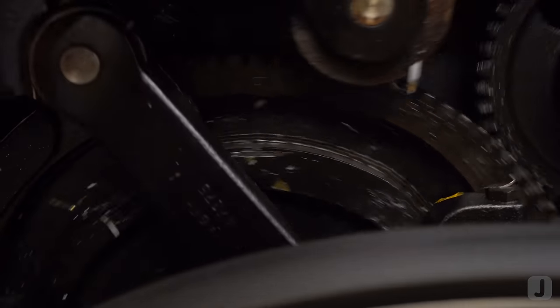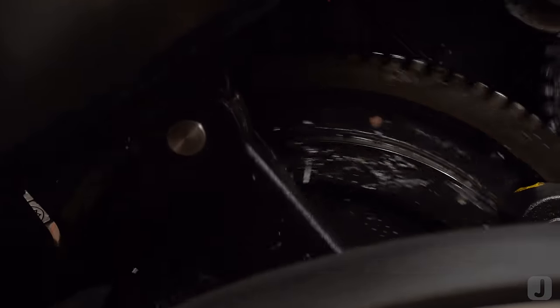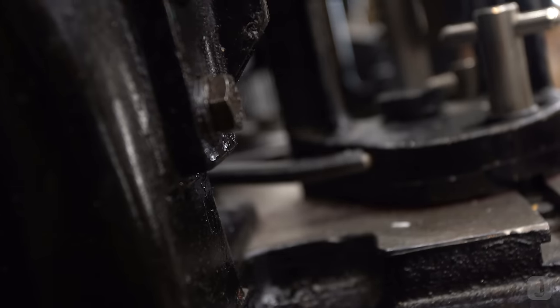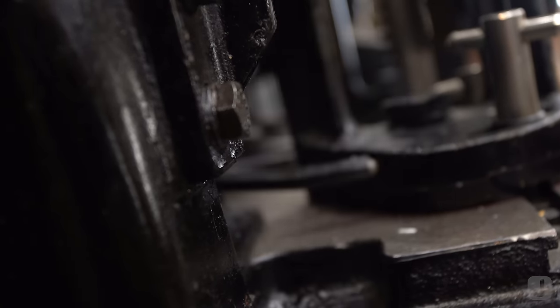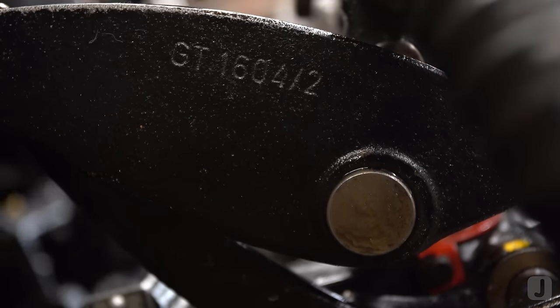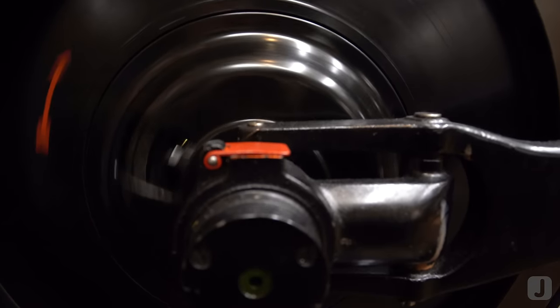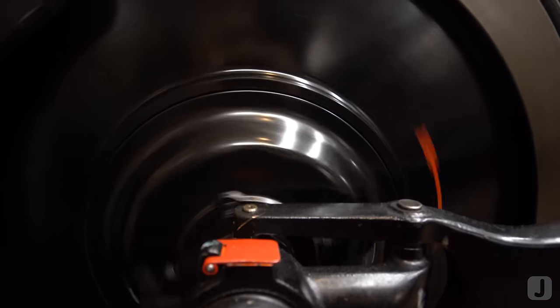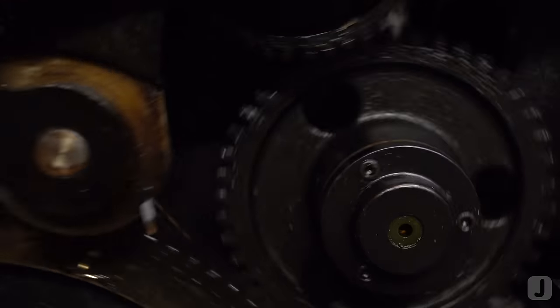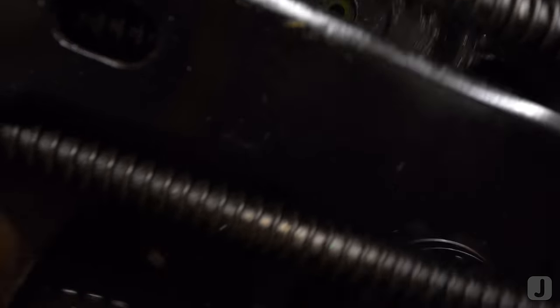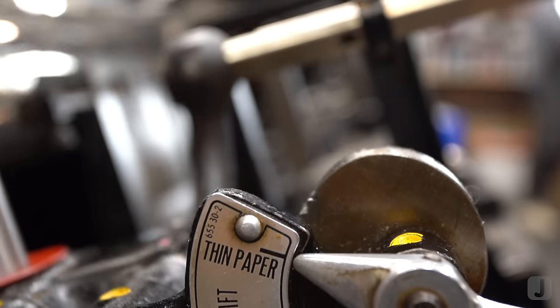For today's project we'll be using our 1960 Heidelberg GT platen letterpress. The GT stands for gross tegel which translates to big platen. This is the larger model of letterpress that was made by Heidelberg at the time. It has an impression area of roughly 13 inches by 18 inches and an impression strength of up to 60 tons and it is equipped with a heated base and a foil puller for running hot foil stamping.